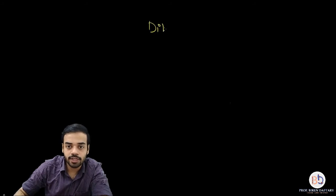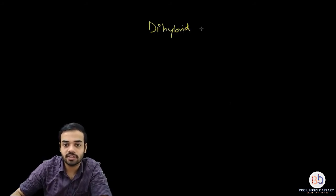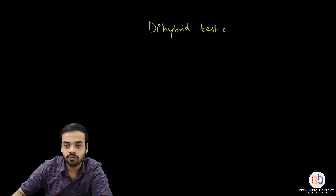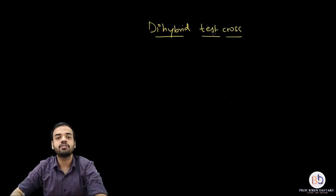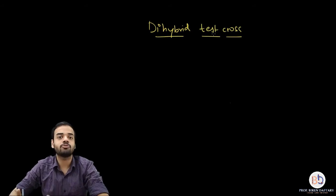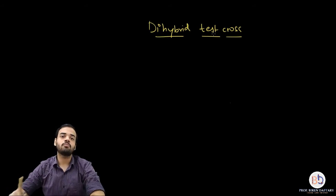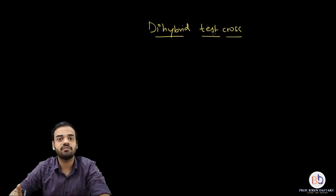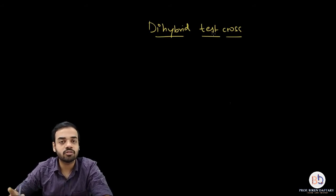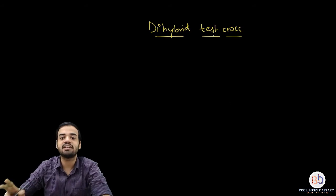I have already made a video lecture on back cross and test cross. So if you haven't seen that video, kindly click on the link which you might be seeing on the top right-hand corner of the screen and watch that first. In that video, I have shown the example of a monohybrid test cross, whereas here we are going to select two characters because it is a dihybrid.